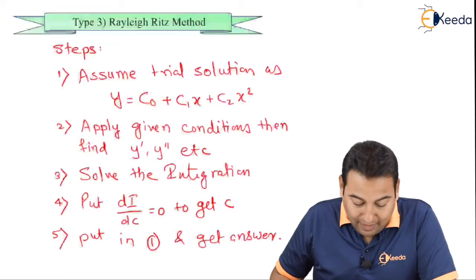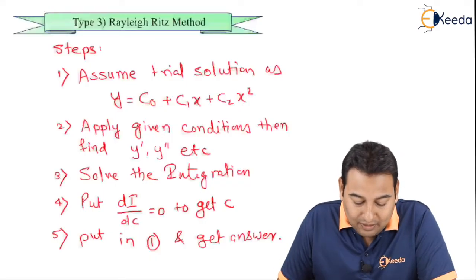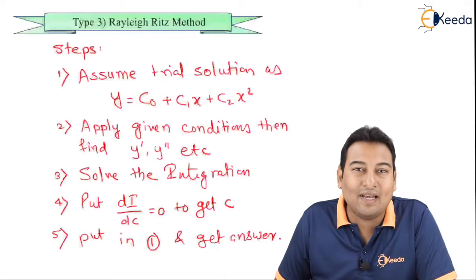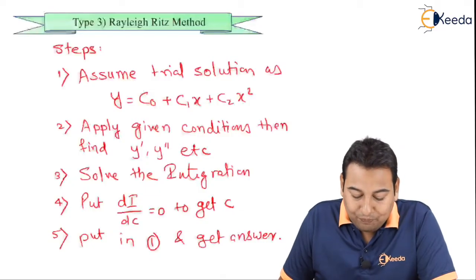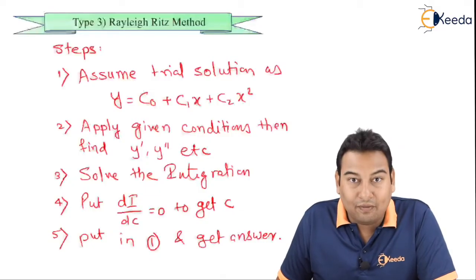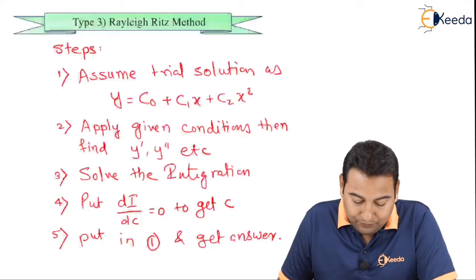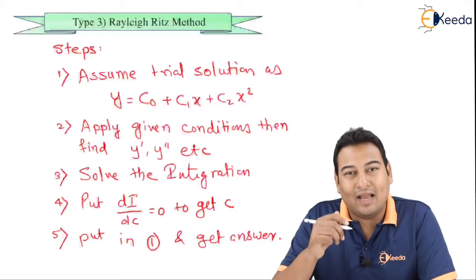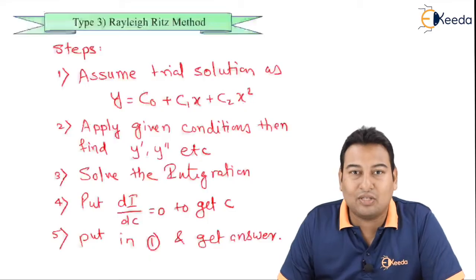These are the five steps. If you follow the steps, these problems are very simple. Step 1: assume the trial solution as y = c0 + c1x + c2x². Step 2: apply the given conditions and find y', y'', and so on, whatever is required. Step 3: solve the integration. Step 4: put dI/dc = 0 and get c. Step 5: put that constant in equation 1 to get the solution.